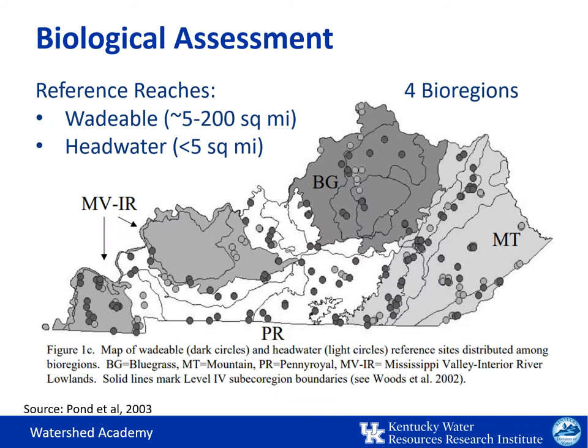In Kentucky, biological health is determined based on the stream's location within a specific bioregion and its size class — whether it's considered wadeable with a watershed between 5 and 200 square miles, or a headwater stream with a watershed of less than 5 square miles. Kentucky has four bioregions. From west to east, these include the Mississippi Valley Interior River (MVIR), the Pennyrile (PR), the Bluegrass (BG), and the Mountain (MT).